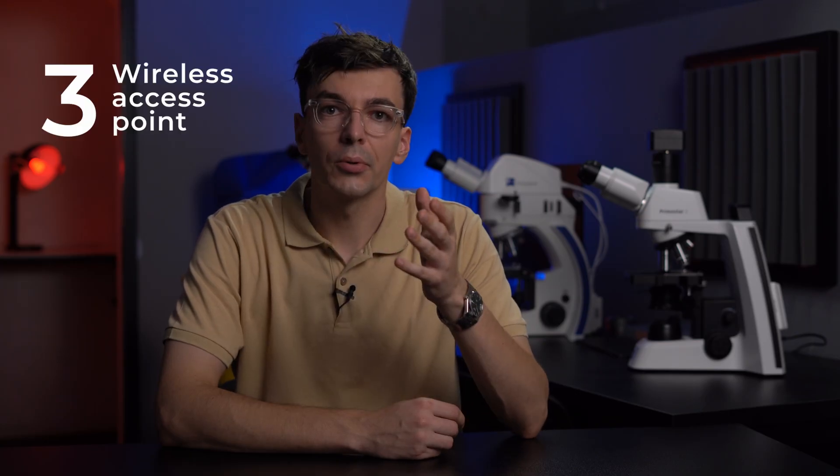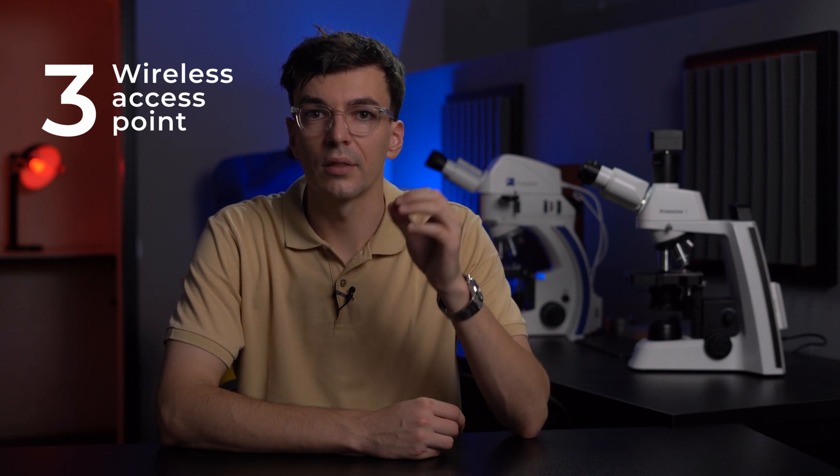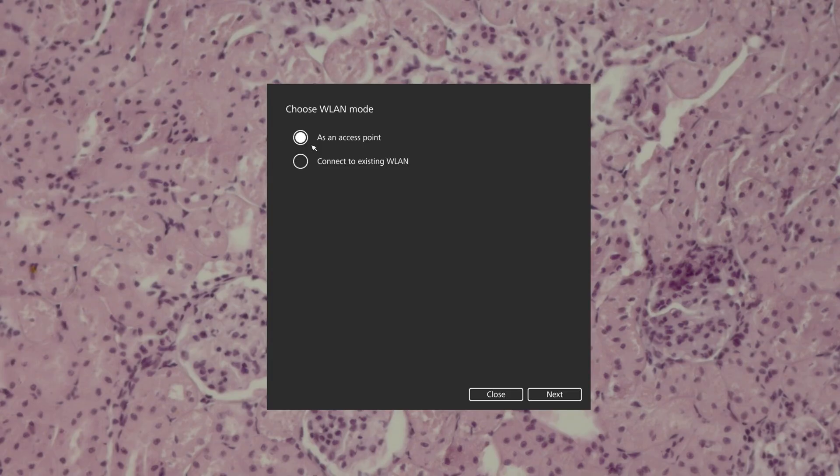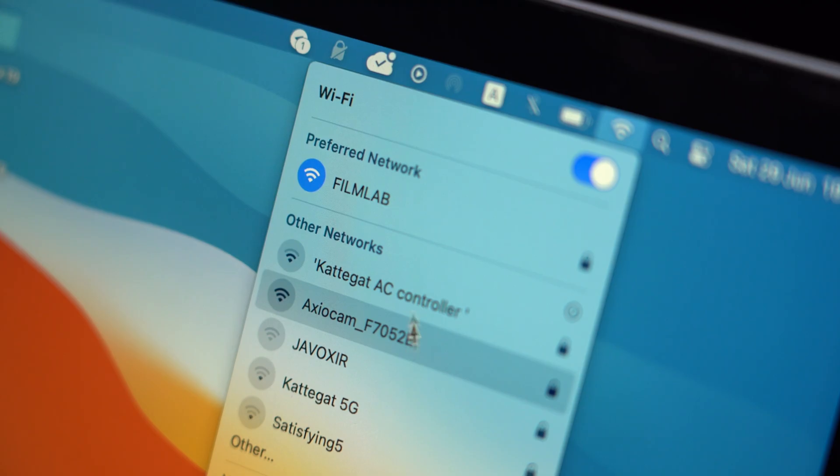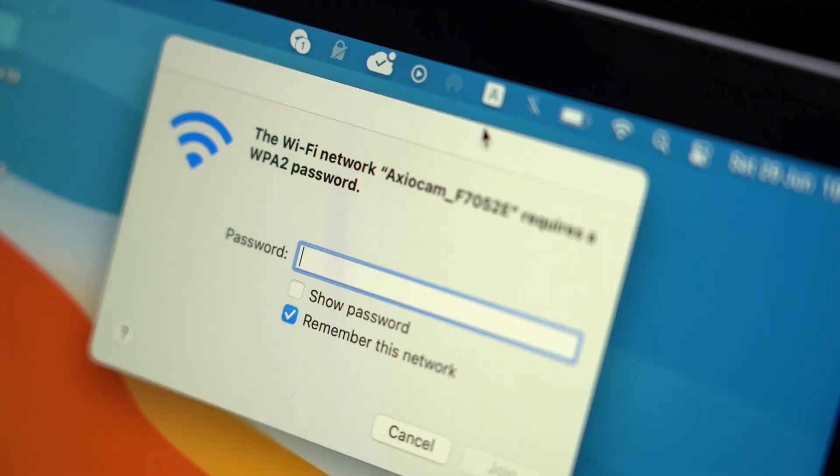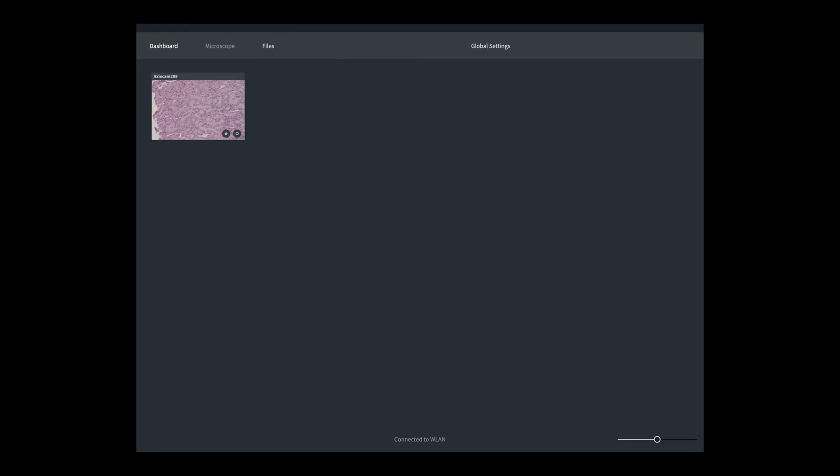The third option is to create an access point using the Axiocam. We need to do the same steps as in the previous topic, but in the Wi-Fi settings we need to change the selection to as an access point. Your camera has now become an access point. Connect your workstation to this network using the password and Axiocam 208 will appear in the list of available microscopes.